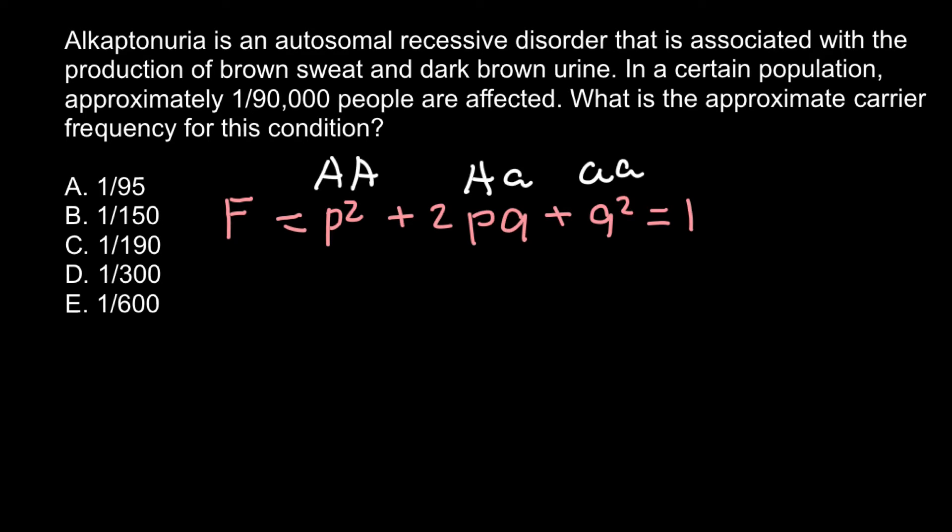And of course, all the alleles p in this formula plus all the alleles q would equal one, because these three genotypes are made by only two alleles: dominant allele A and recessive allele a. So we put dominant allele A here and recessive allele a here.